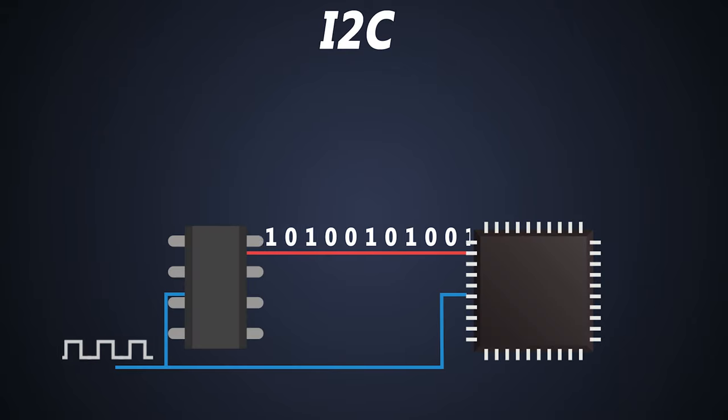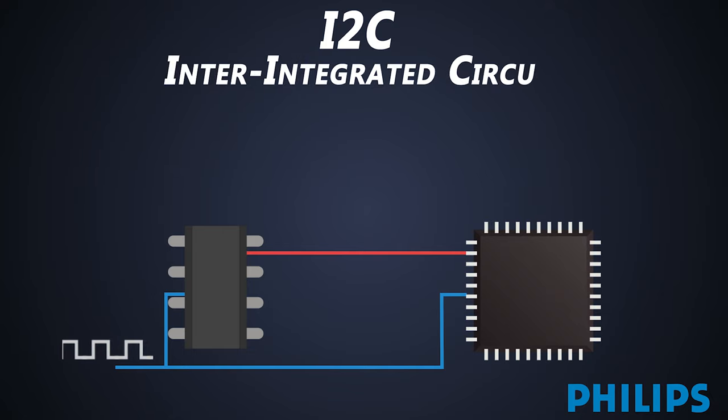I2C is a type of synchronous communication protocol. It is also known as 2-wire communication protocol. It was invented by Philips. I2C stands for Inter-Integrated Circuits.